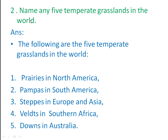Second question: name any five temperate grasslands in the world. The following are the five temperate grasslands: prairies in North America, pampas in South America, steppes in Europe and Asia, veldt in southern Africa, and downs in Australia.